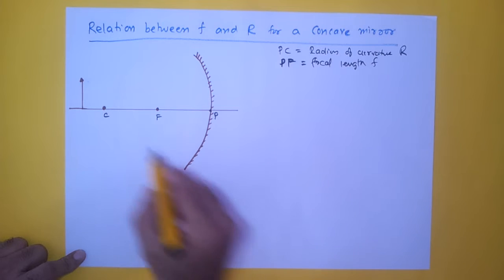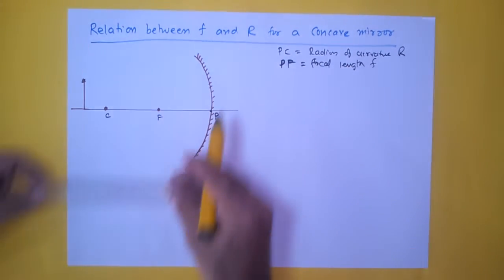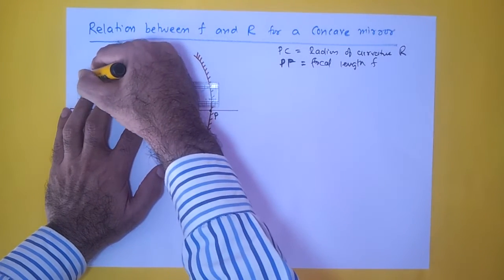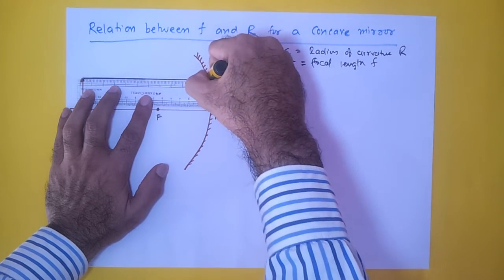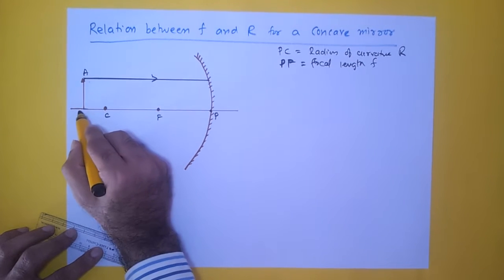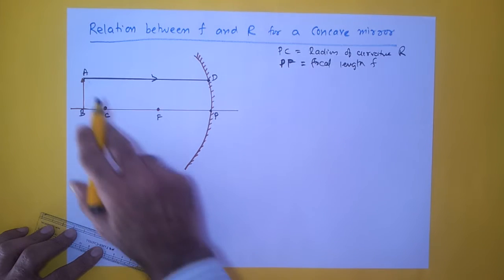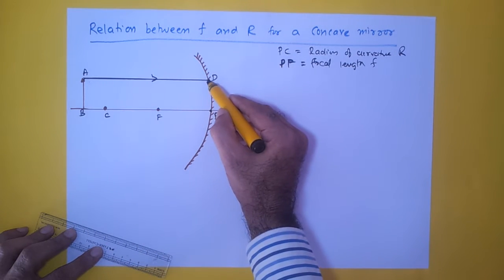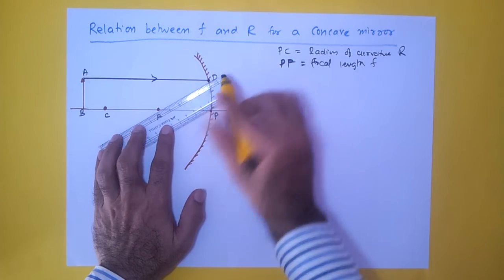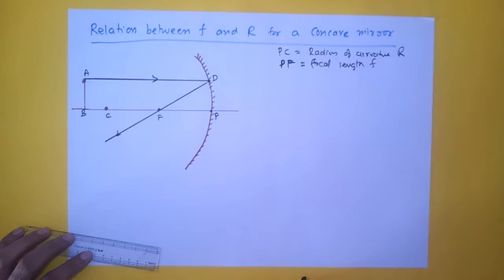Since this is a concave mirror, a ray of light traveling from the object and incident on the mirror — this is object AB — is incident at point D. Since it is parallel to the principal axis, it will reflect in such a way that it passes through the focus. This is the direction in which the reflected ray goes.